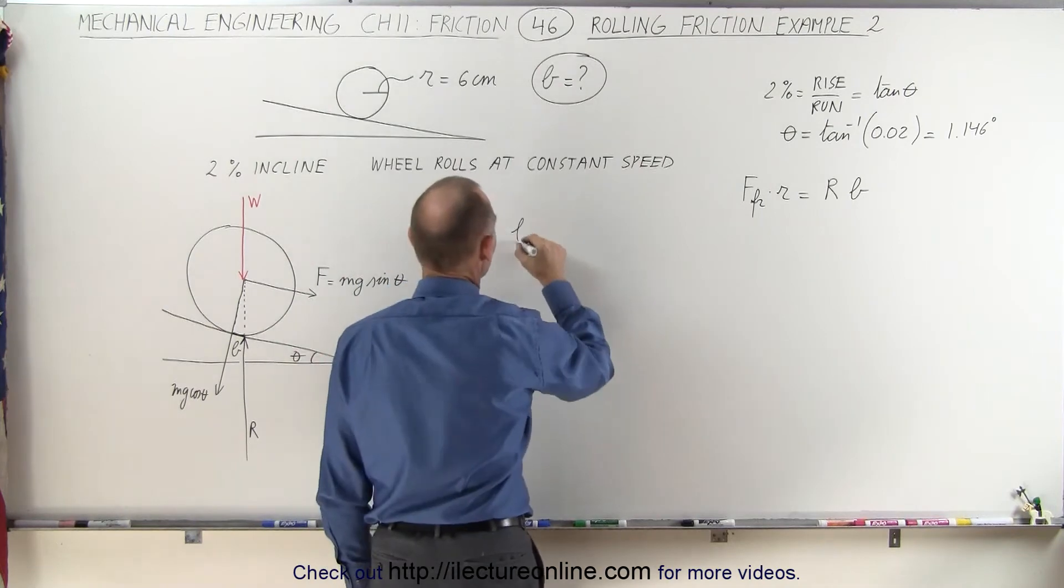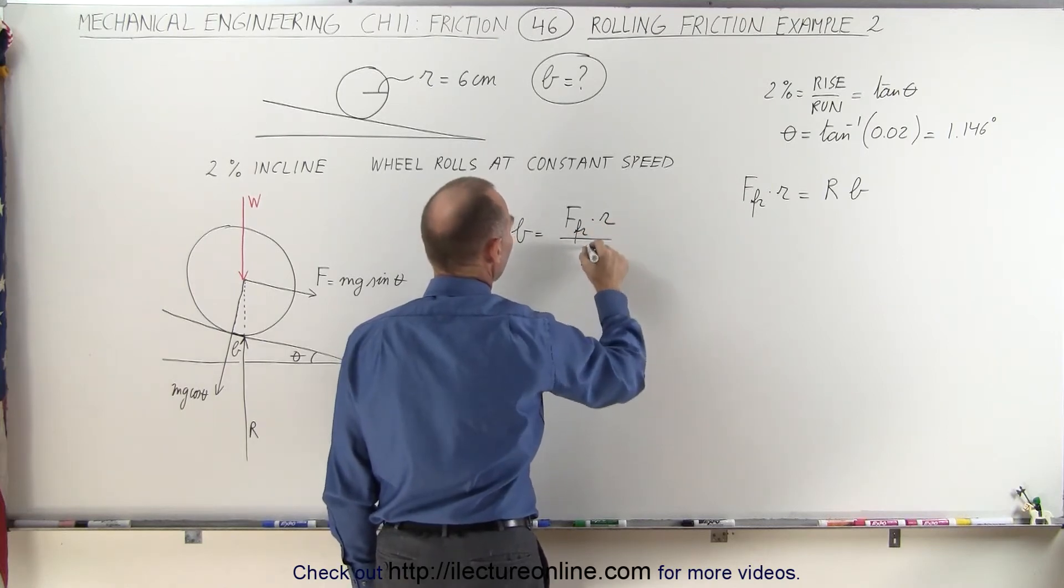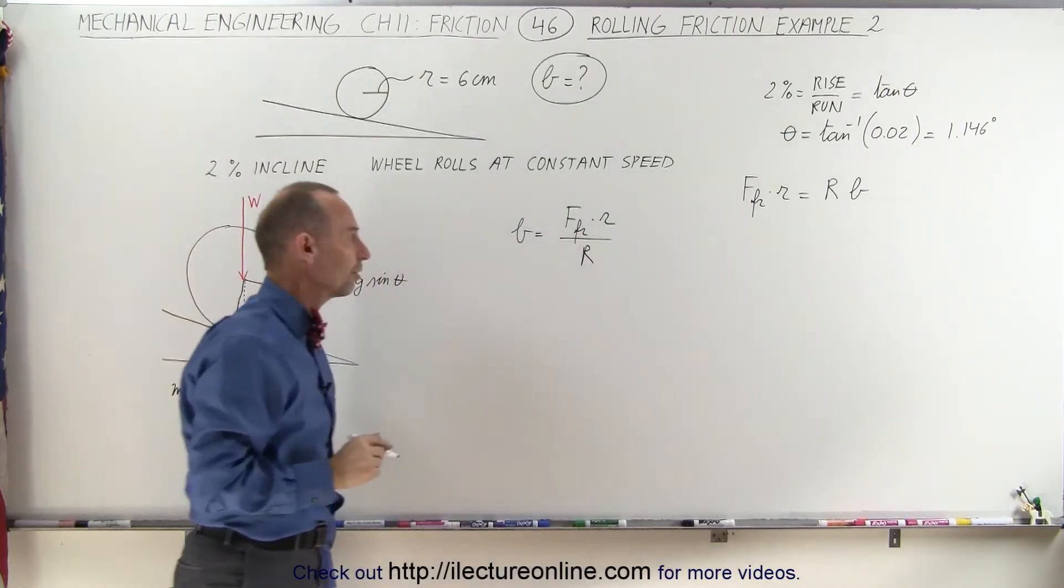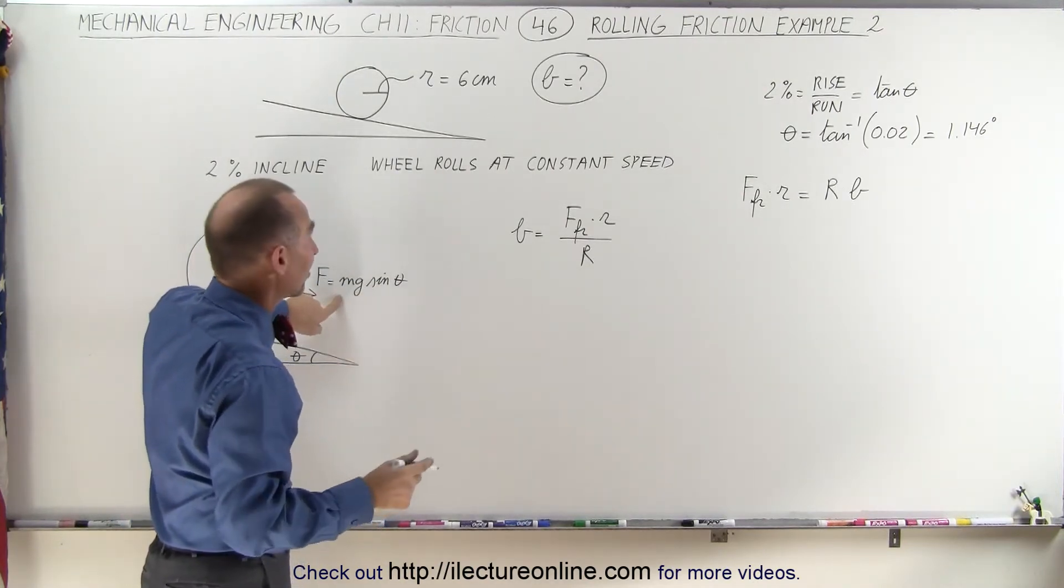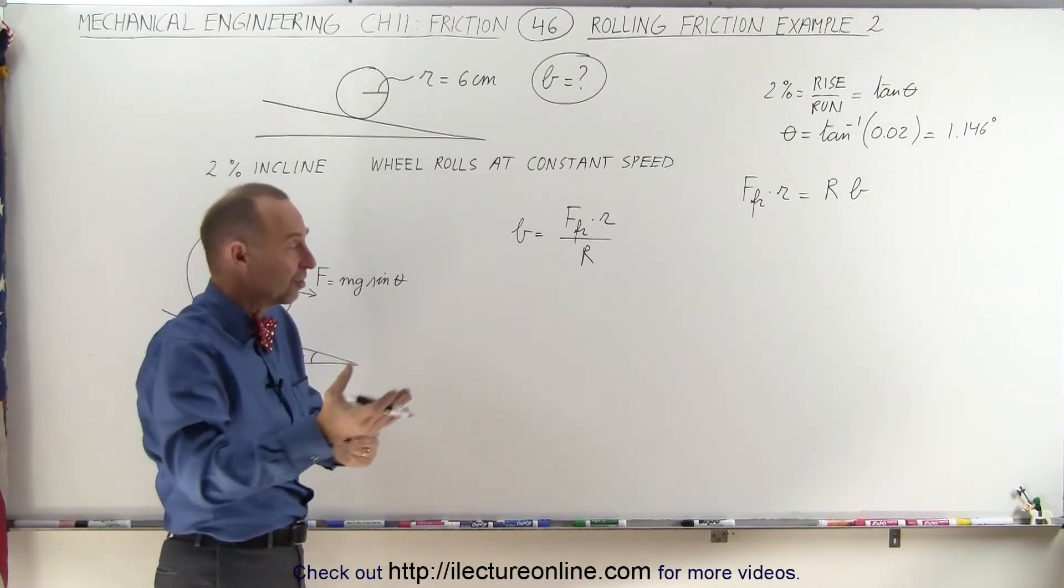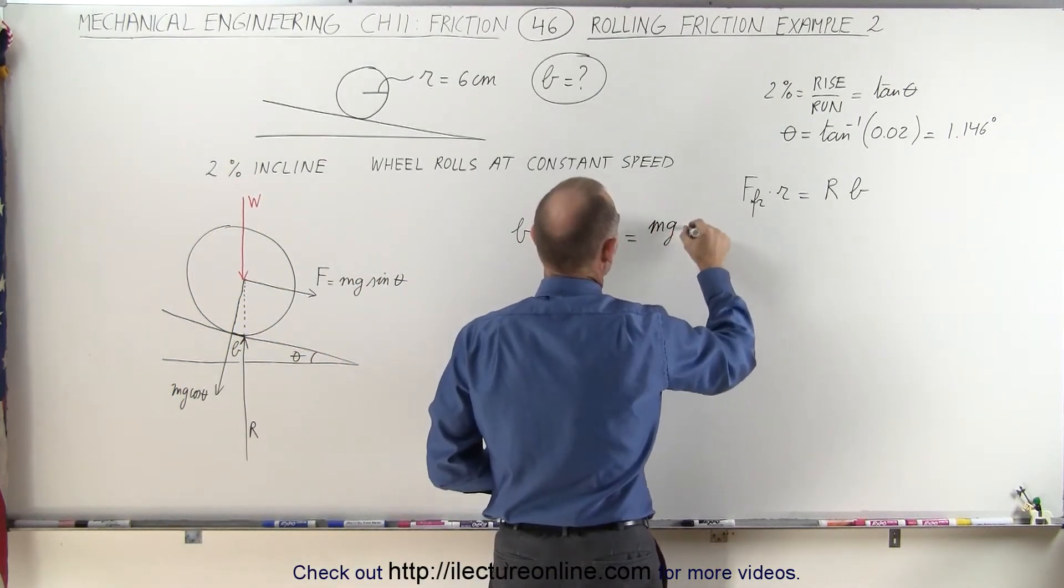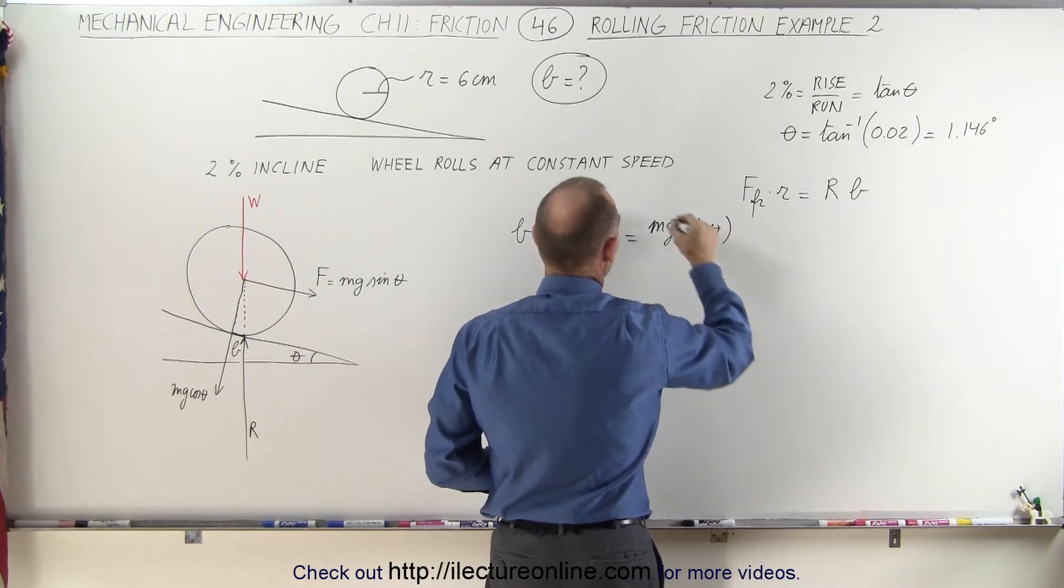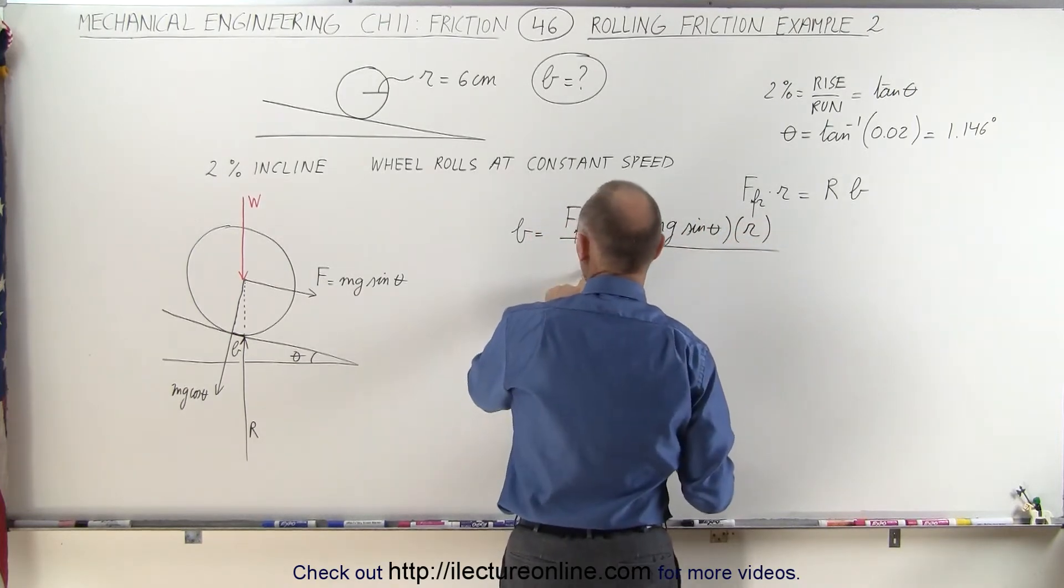Solving that for B, we can say that B is equal to force friction times the radius divided by the reaction force. Now we said already that the friction force must by definition equal mg sine theta because it's not accelerating or decelerating. So this is equal to mg sine theta. The radius is known, we call that R, and then divide that by the reaction force.